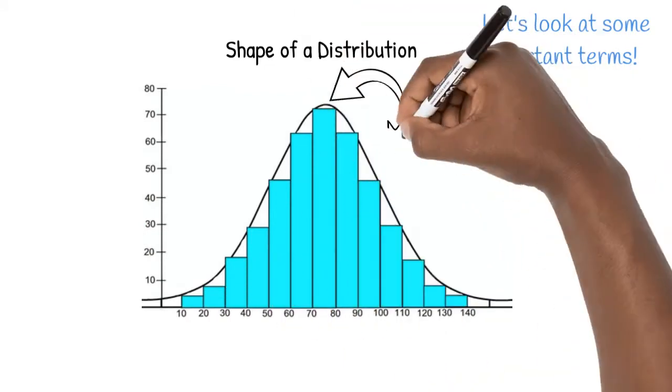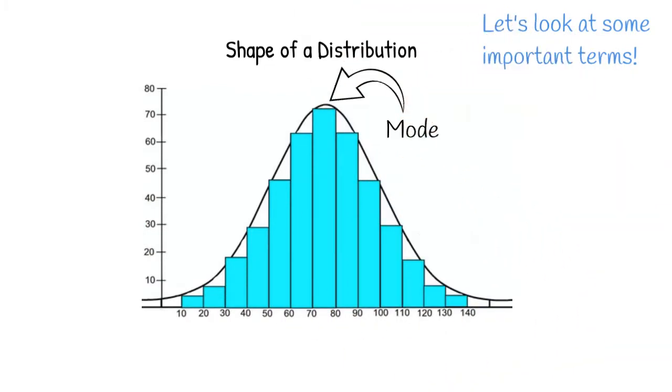A mode is the value in our data set with the highest frequency. Looking at a graph, if we see one hump, the data is said to be unimodal. With two humps, the data is bimodal, and with more humps, the data is multimodal. Don't worry, we'll see more examples in a minute to make sure you understand this.